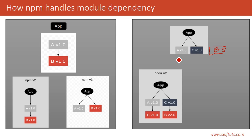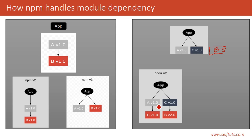If we look at the same scenario under NPM version 2, inside the app folder a node_modules folder is created. Module A is downloaded, and inside A a new node_modules folder is created with B version 1.0. For module C, which depends on B version 2.0, NPM version 2 downloads B version 2.0 inside the node_modules folder of C, and B version 1.0 inside the node_modules folder of A — so two separate copies of B exist.